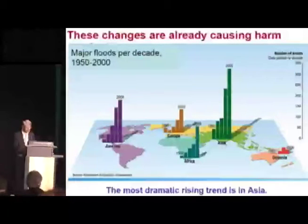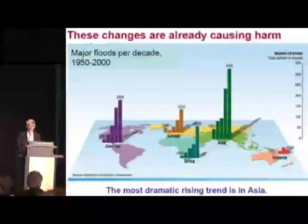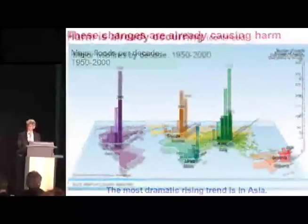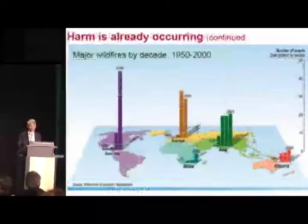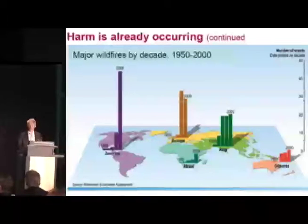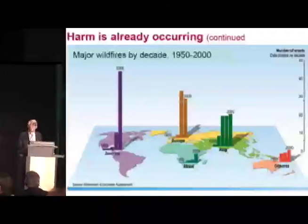This is a graphical depiction of the incidence of major floods by decade and by continent from the 1950s through the year 2000. Floods are up dramatically on virtually every continent, with the most dramatic rising trend in Asia. Major wildfires are up on every continent, decade by decade, around the world. And we know why — the conditions that make wildfires more severe are strongly aggravated by the global climatic disruption we are experiencing.